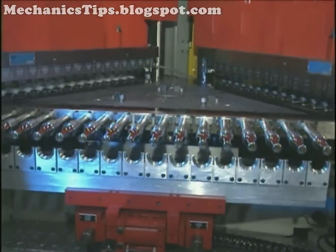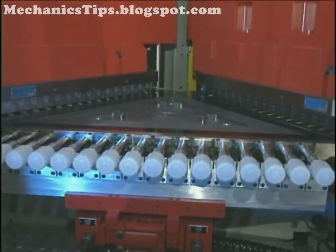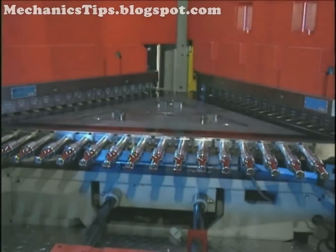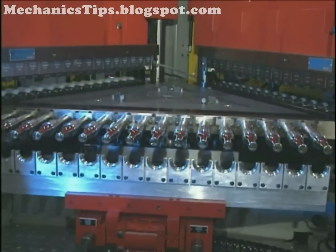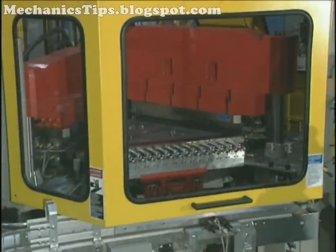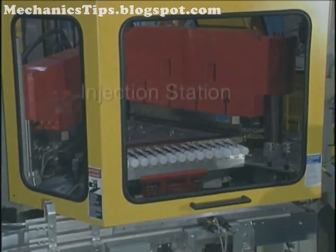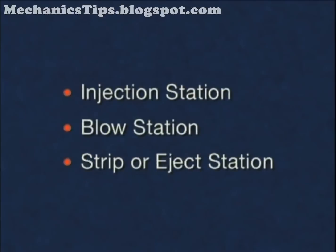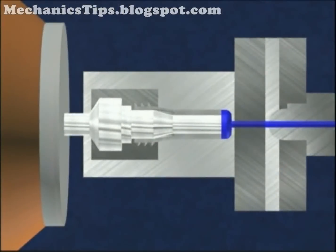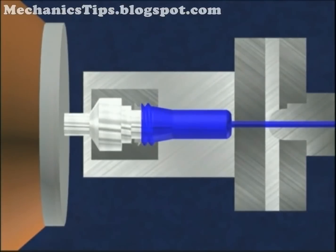Injection blow molding incorporates elements of conventional thermoplastic injection molding with blow molding and is generally more economical than extrusion blow molding for containers under a quarter liter in size and large production runs. Injection blow molding machines typically contain three stations: the injection station, the blow station, and the strip or eject station. The injection station is basically an injection molding machine. A ram, usually a reciprocating screw, forces the melted thermoplastic resin under pressure onto a metal core rod held within a closed split parison cavity injection mold.